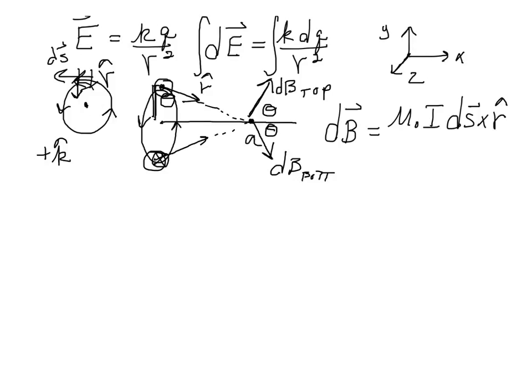And if you can picture what's happening, you see that for every ds I go around this loop, cutting it up into ds, each one is going to give me a dB, and if I looked at all of those dB's, they would sweep out a cone of angle theta around the x axis.